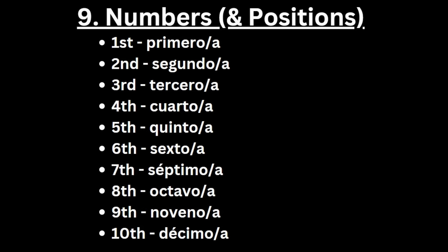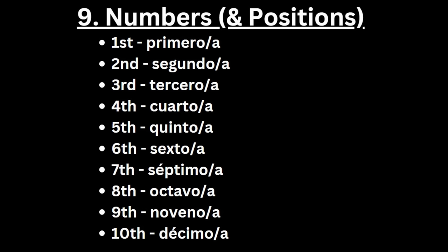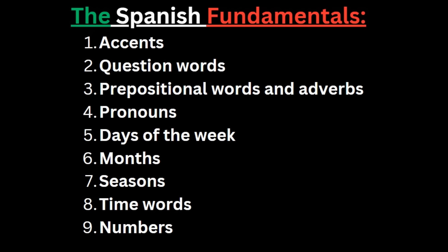Ordinal numbers have genders: first is primero or primera, second is segundo or segunda, third is tercero or tercera, fourth is cuarto or cuarta — cuarto can also mean room or quarter of the time depending on context. Fifth is quinto or quinta, sixth is sexto or sexta, seventh is séptimo or séptima, eighth is octavo or octava, ninth is noveno or novena, tenth is décimo or décima. That covers accents, question words, prepositional words and adverbs, pronouns, days, months, seasons, time words, and numbers.